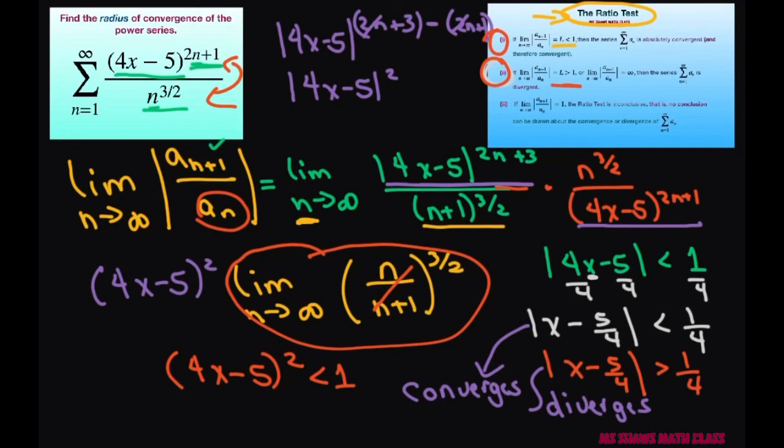Therefore your radius of convergence is r equals 1 fourth. Sorry I'm all over the place, but I didn't want to go to a different slide because I want to be able to see everything. So basically this is what you're looking at when you're looking for the radius of convergence. Thank you, have a nice day, bye bye.